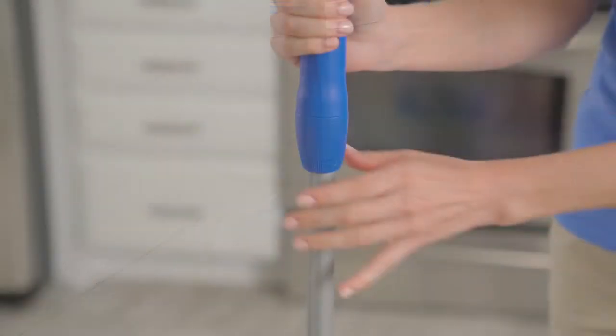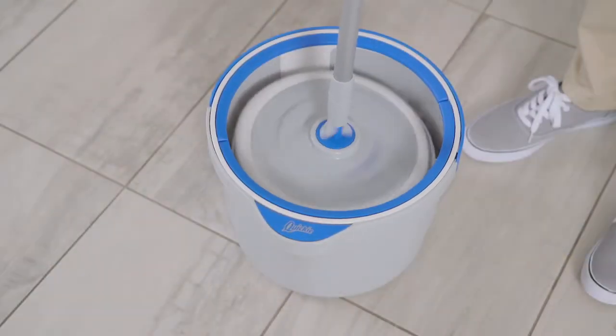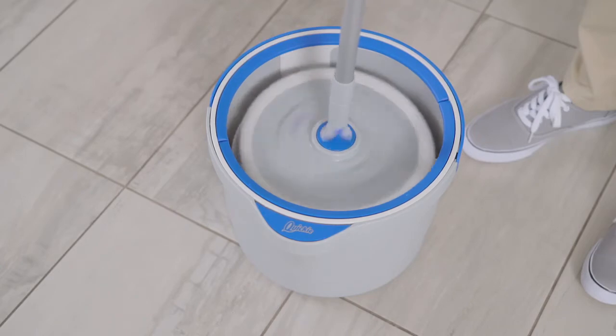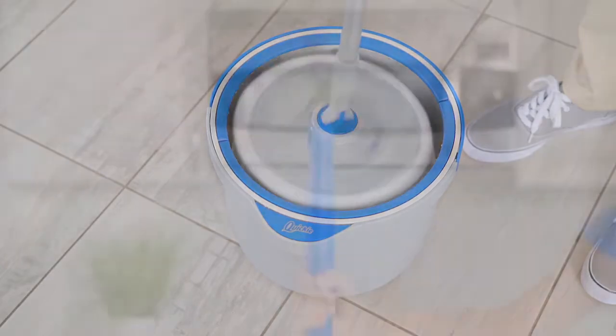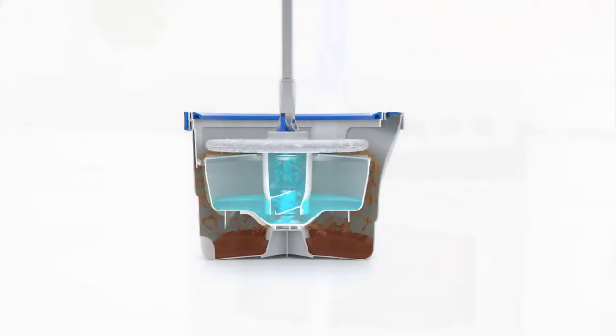Then, twist the dial on the handle to the unlocked position and place the mop head directly on top of the clear lid of the inner bucket. Now, gently lower and raise the mop handle. The first three pumps spray the mop head with clean water.